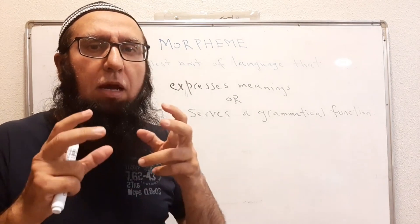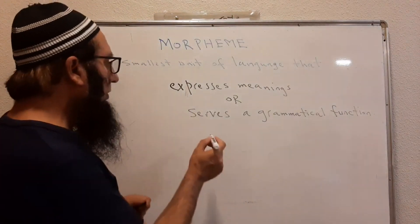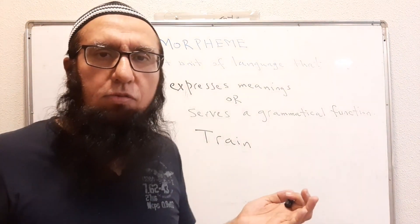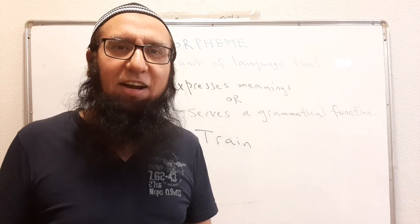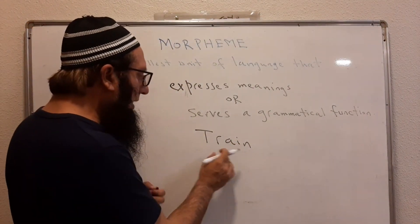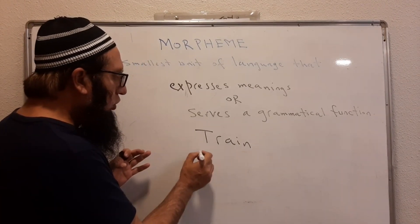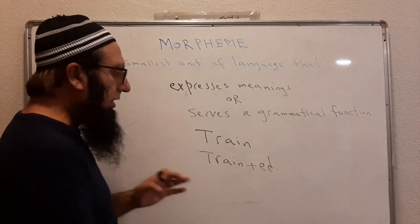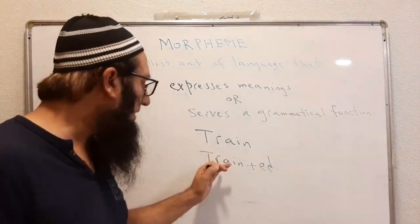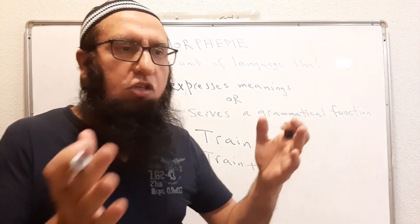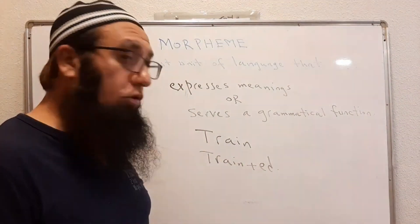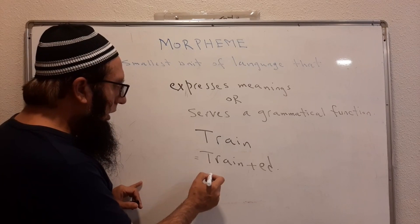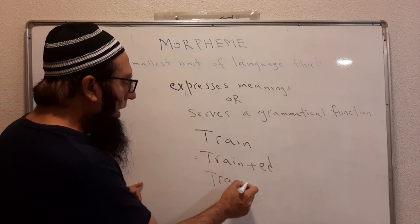For example, the word 'train' — 'train' is one morpheme. It is the smallest unit; we cannot separate anything from it and still get meaning. When we say 'trained,' it becomes 'train' plus '-ed,' so there are two morphemes here. 'Train' and '-ed' — two morphemes. These are also two syllables, but we will discuss the difference between morphemes and syllables separately.